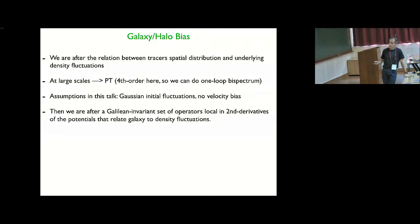You go to one loop in the power spectrum but people have only used tree level bias so there is an inconsistency there that we want to fix. And I'm going to assume that the fluctuations initially are Gaussian coming from inflation and that there is no velocity bias.